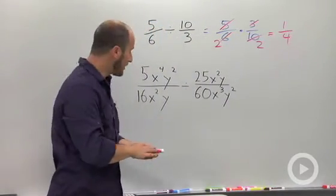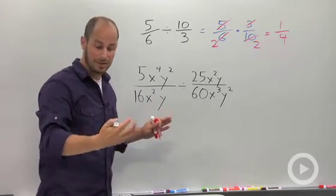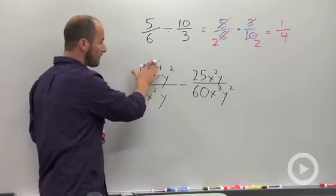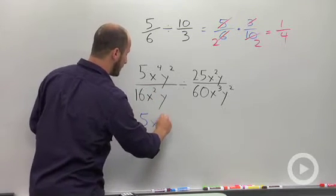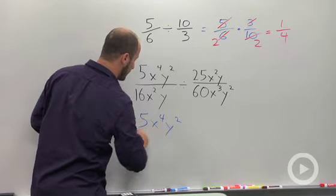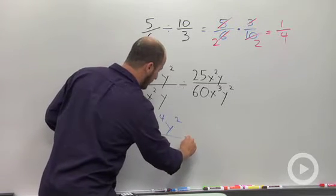When dealing with rational expressions, this one is pretty ugly, but we can still do the exact same thing. So our first term always stays the same. So we end up with 5x to the fourth y squared over 16x squared y times,